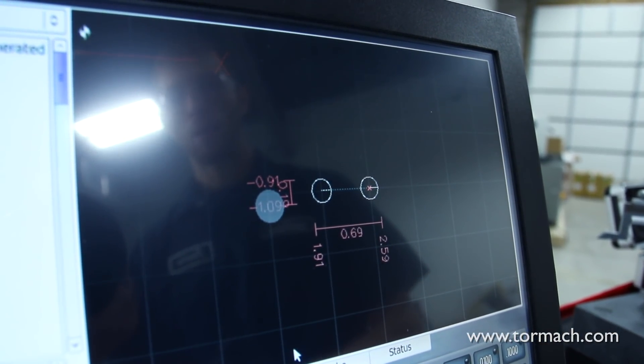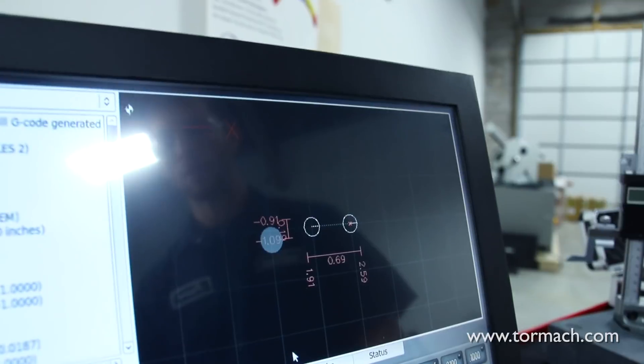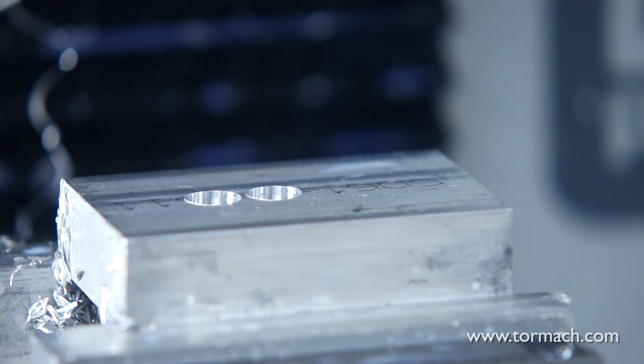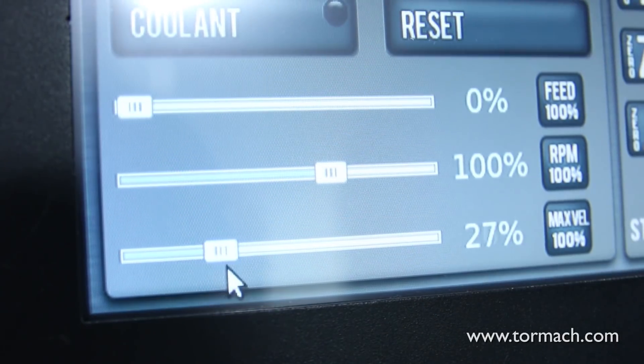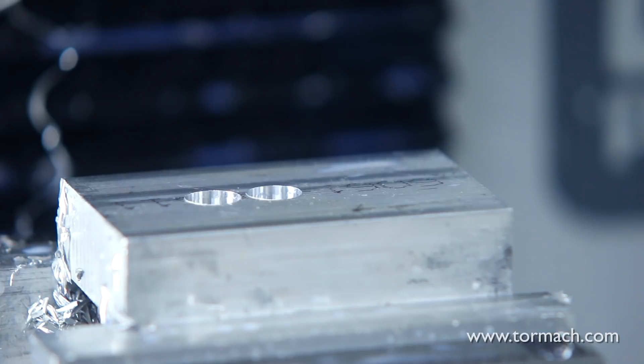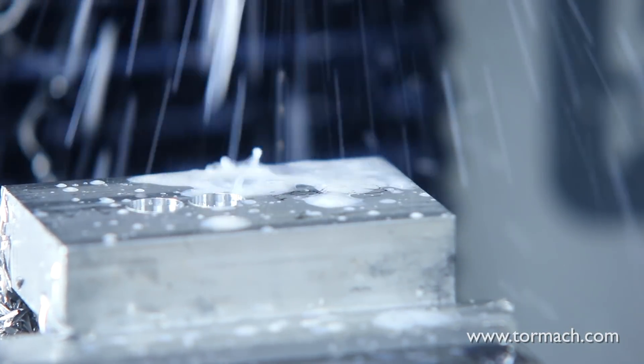I'll go ahead and run this in the machine and show you guys how it works. Now we're ready to prove this program out. I'm going to do the same way I did last time. I'm going to turn my feed rate and my max velocity down, go ahead and start the program, and let it walk over to the part nice and slow.